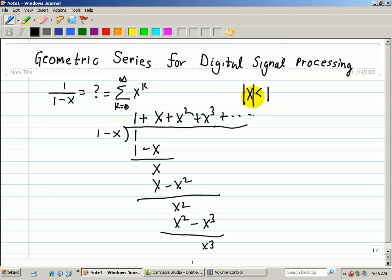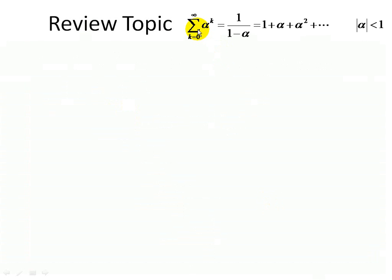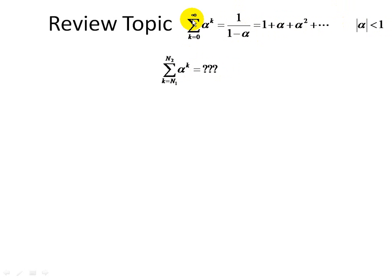Now we're going to use this closed-form solution for the infinite geometric series to generate one where we have both a finite upper and lower limit. We found that the summation from k equals 0 to infinity of alpha to the k, where the magnitude of alpha is less than 1, gives 1 divided by 1 minus alpha. Now, what happens when we have a finite sum — which comes up a lot in digital signal processing with shifters, multipliers, and adders — and we want to find a closed-form solution?